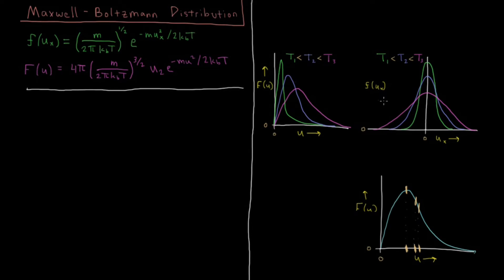As the temperature gets lower and lower, the particles have lower and lower kinetic energy in the x, y, or z direction, and on average they're zero. So at lower temperatures you get a more narrow curve — a distribution where they're more clustered around zero. As the temperature gets hotter, the distribution spreads out more and you have more components at larger values, both positive and negative.